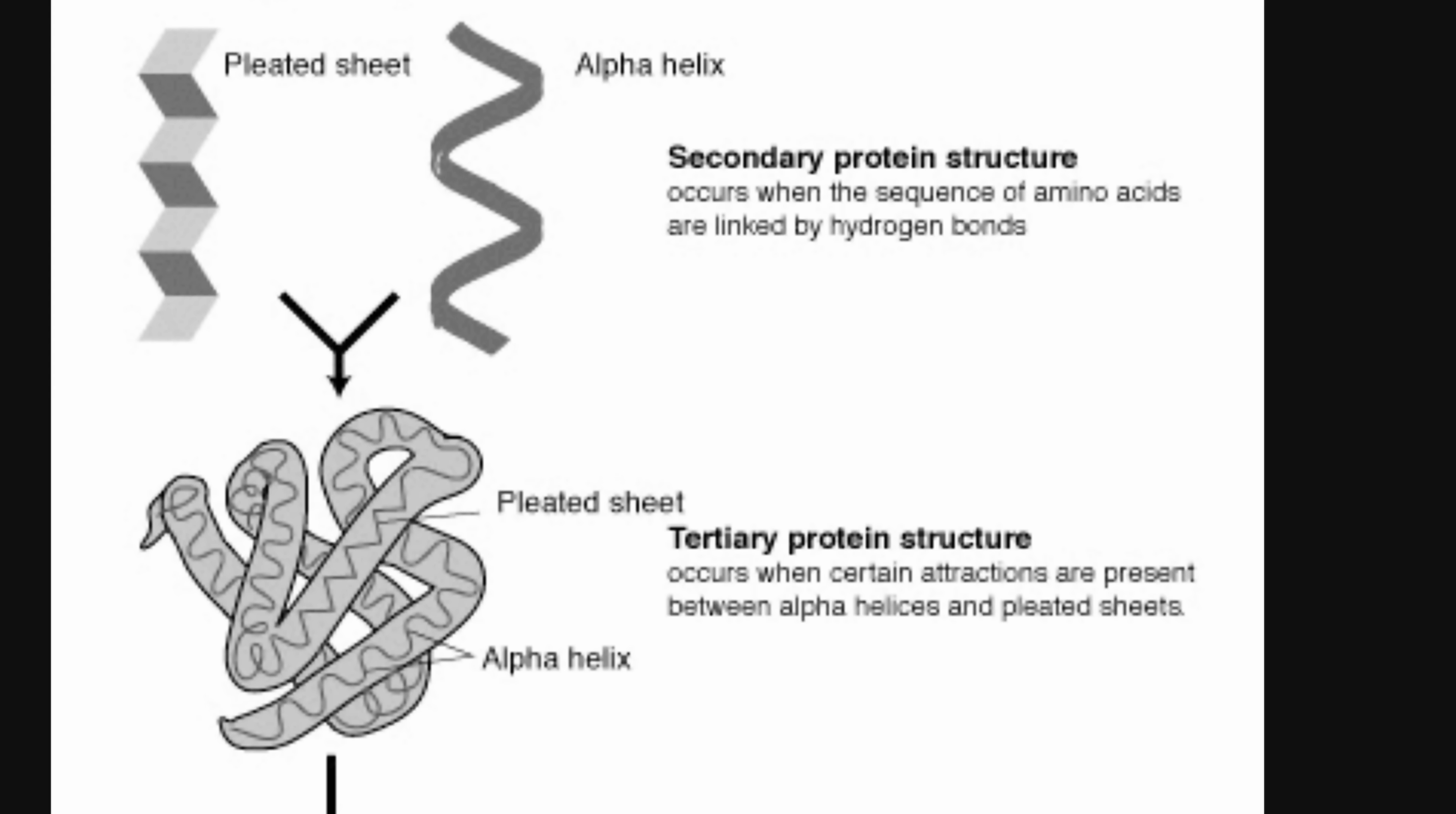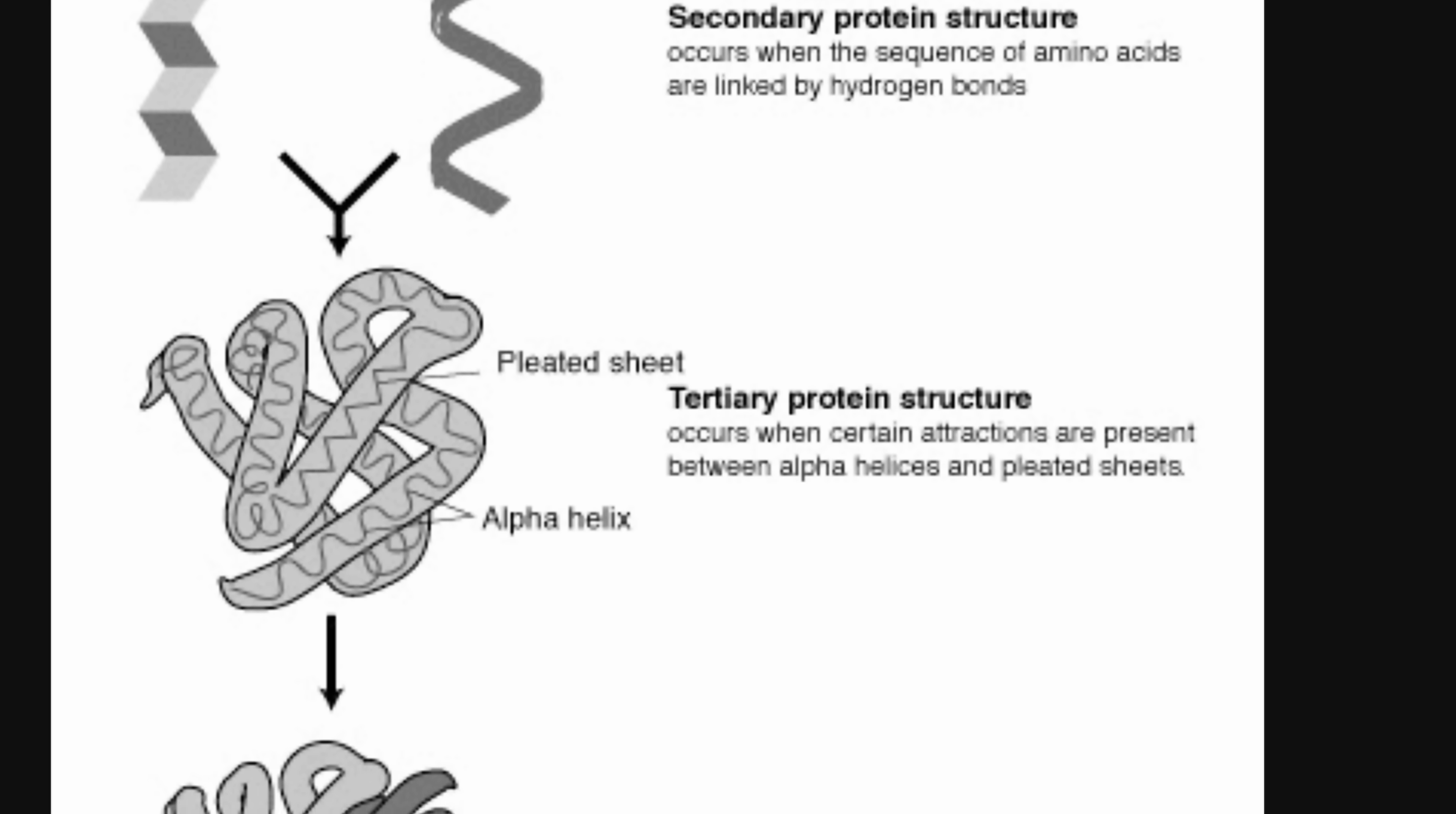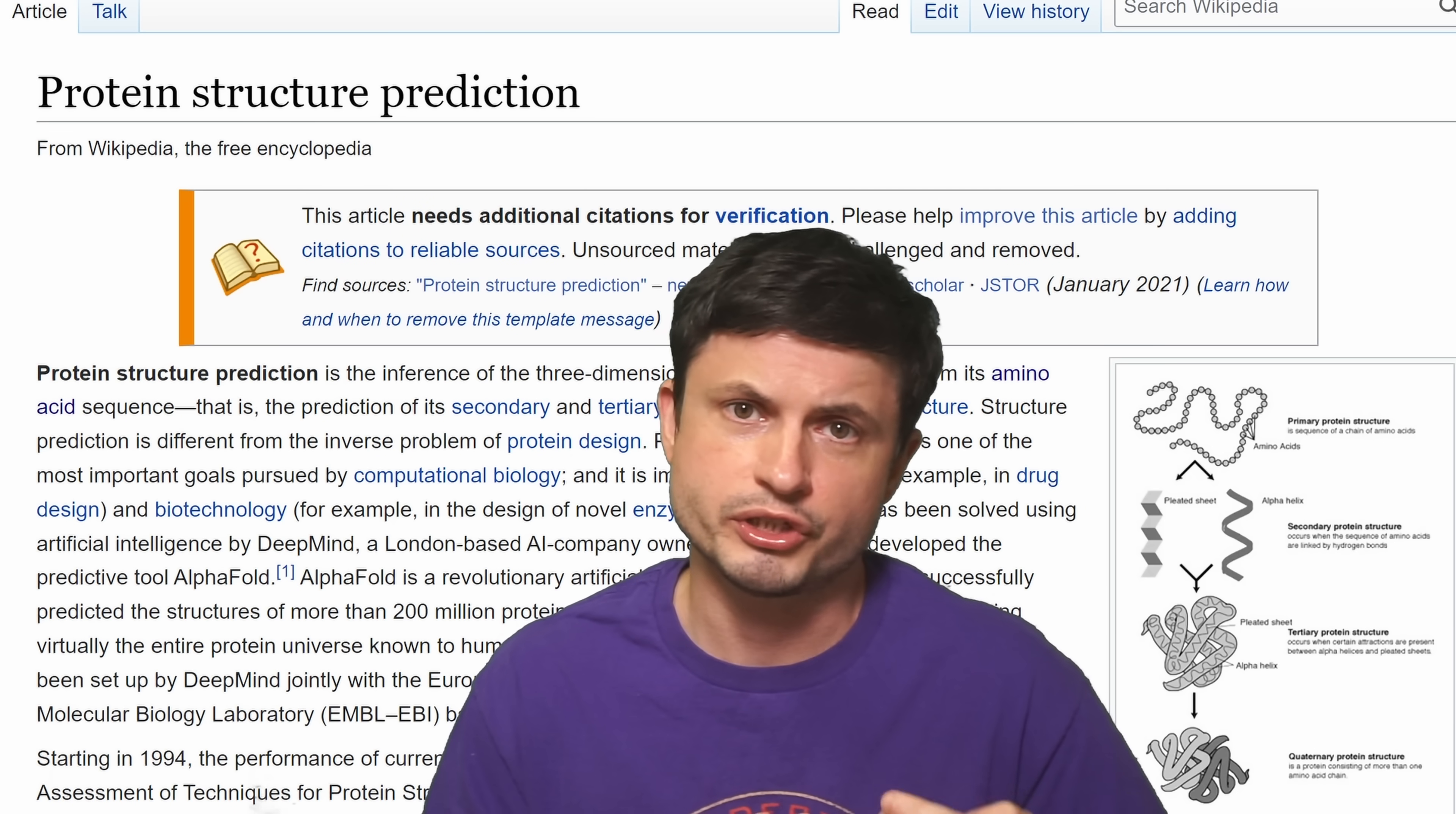This is actually one of the biggest mysteries and one of the biggest studies in modern biochemistry. The study that tries to predict what type of a shape a protein will form based on a specific sequence of amino acids. Now in the past, the scientists used various scanning techniques and extremely complex scanning techniques to try to discover a shape of a known protein.